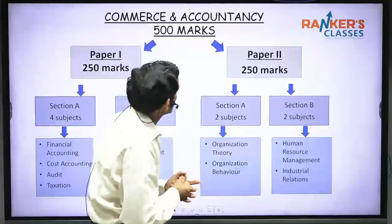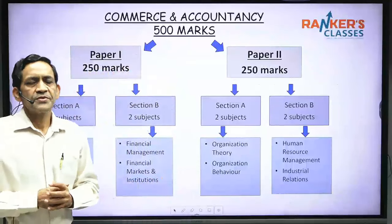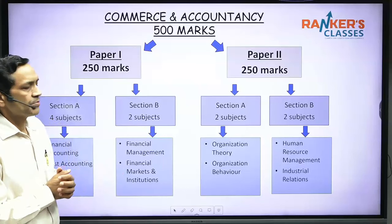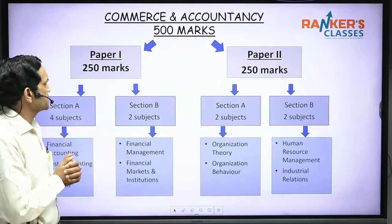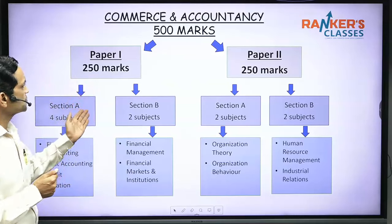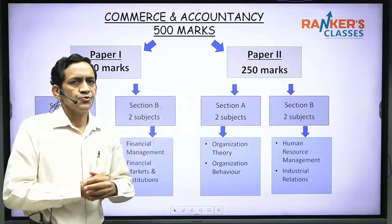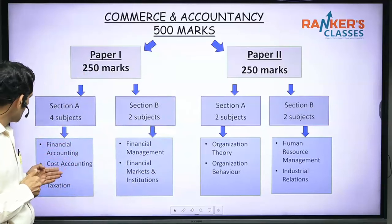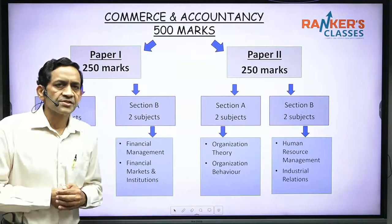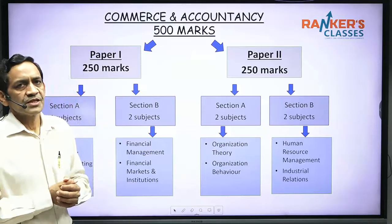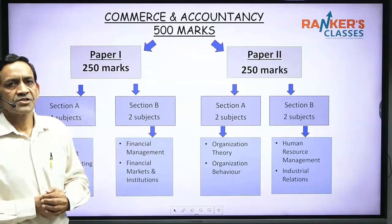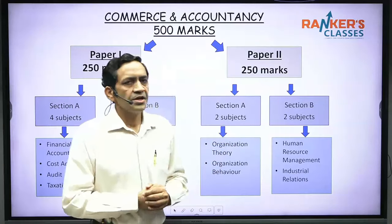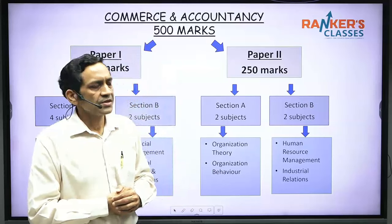Commerce carries 500 marks, just like any other optional. There are two papers — Paper 1 and Paper 2 — 250 marks each. In Paper 1 there are two sections: Section A consists of four subjects — Financial Accounting, Cost Accounting, Audit, and Taxation — and Section B consists of two subjects — Financial Management and Financial Markets and Institutions. Paper 2 consists of Section A: Organization Theory and Organization Behavior, and Section B: Human Resource Management and Industrial Relations.